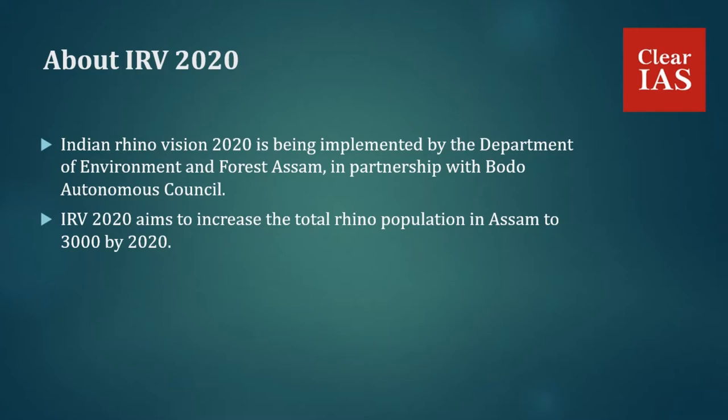Wildlife experts believe that the numbers of Indian rhinos can be increased to 3000 in the next 15 years, and this idea gave birth to Indian Rhino Vision 2020. IRV 2020 is being implemented by the Department of Environment and Forest, Assam, in partnership with the Bodo Autonomous Council.